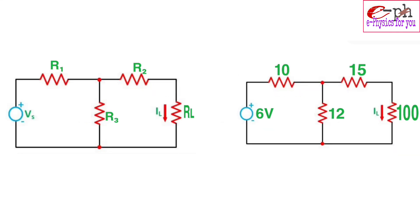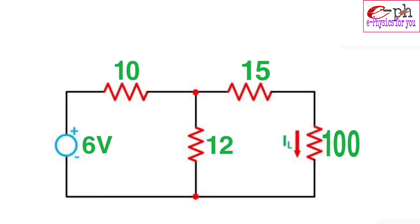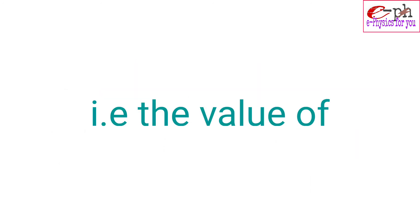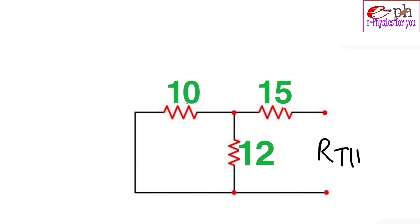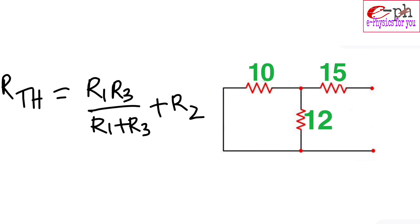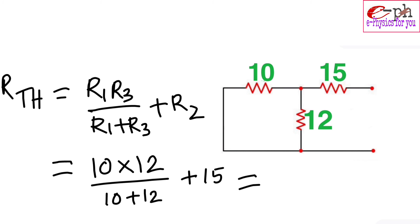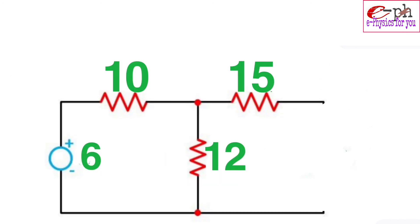We take an example to better understand this theorem. Here Vs = 6 V, R1 = 10 Ω, R2 = 15 Ω, R3 = 12 Ω, and the variable resistance RL = 100 Ω. Our aim is to calculate how much current is flowing through RL. First we calculate the Thevenin equivalent resistance Rth. Since we have the formula for Rth, we put in the values and calculate Rth = 20.45 Ω.